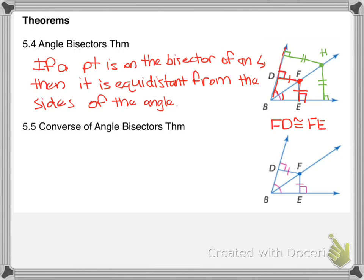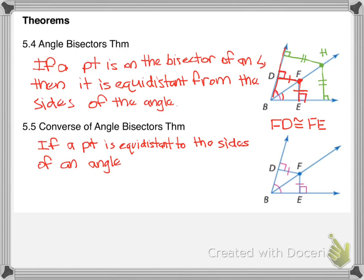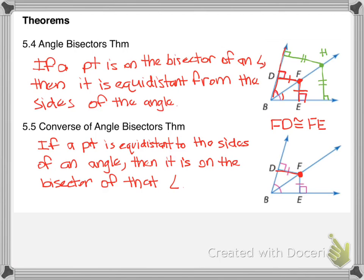The converse of the angle bisector theorem is just the flip: if a point is equidistant from the sides of an angle, then it is on the bisector of that angle. Here, point F is equidistant to points D and E — we know that because of the marks. So F is on the angle bisector, and it bisects angle DBE.